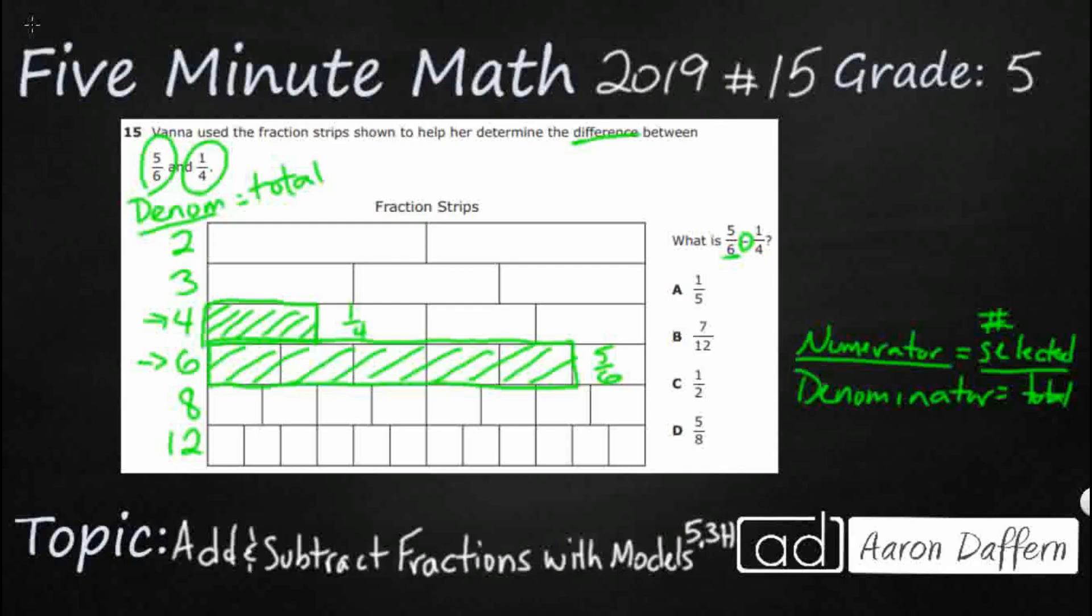So if we wanted to compare these two, well, the difference would be this chunk right here. From the end of my 1/4 to the end of my 5/6, this is my difference. Now, how are we supposed to subtract this? Because it kind of cuts this sixth right here in half. So it's not even an even sixth. So it looks like I've got one sixth, two sixths, three sixths, three and a half sixths. So we can't even measure this in sixths.